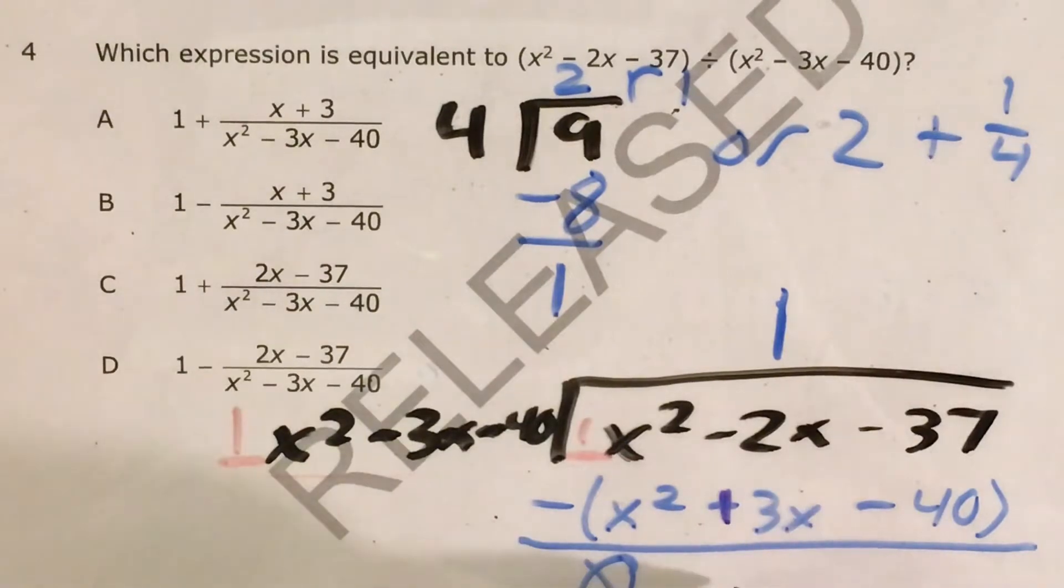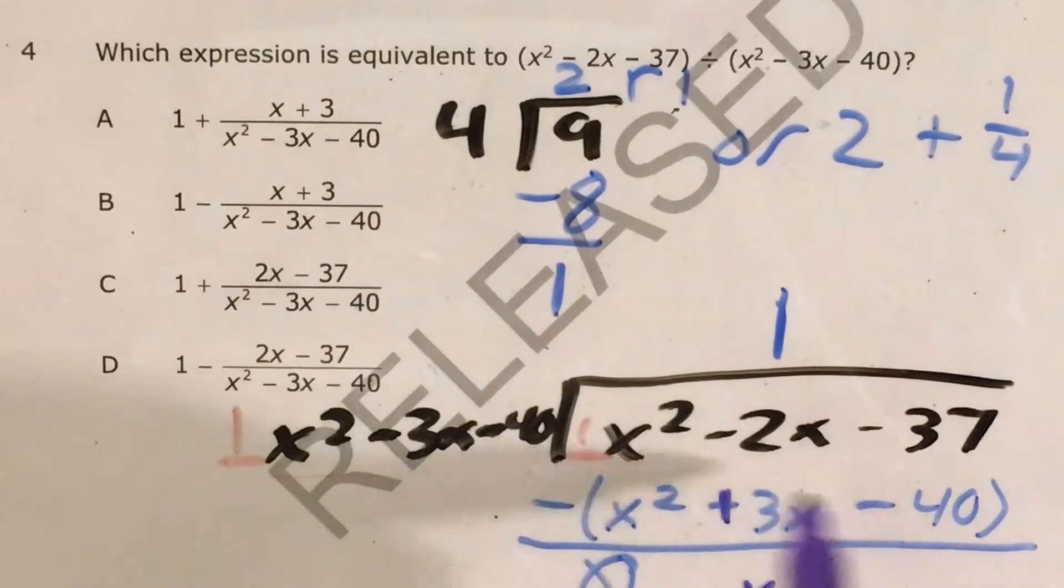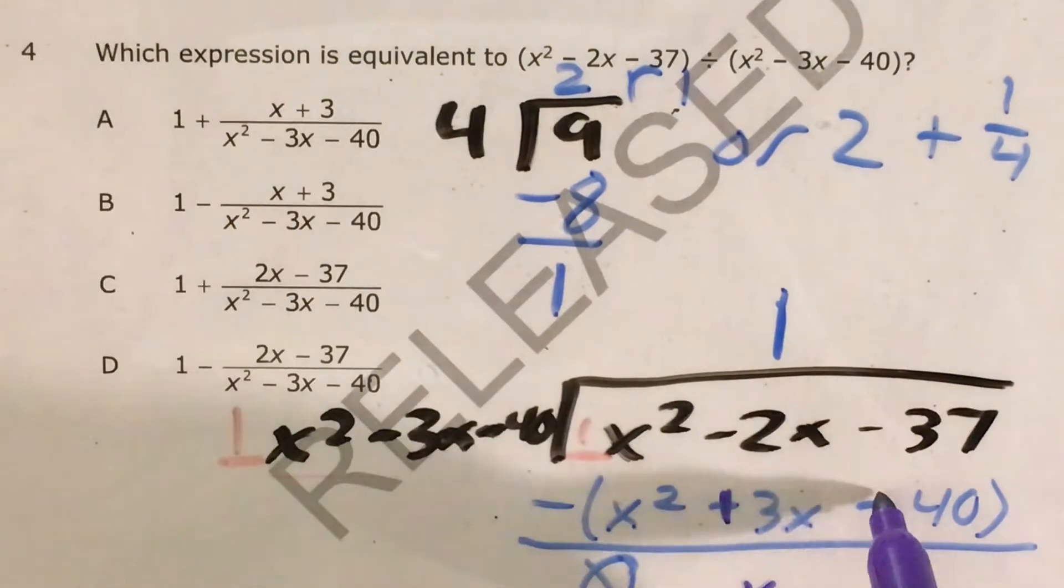Negative two x plus three x is one x or just x. And I'll do the same thing for negative 40. I'll take that negative sign and I will change this from negative to positive. Negative 37 plus 40 gives us positive three.